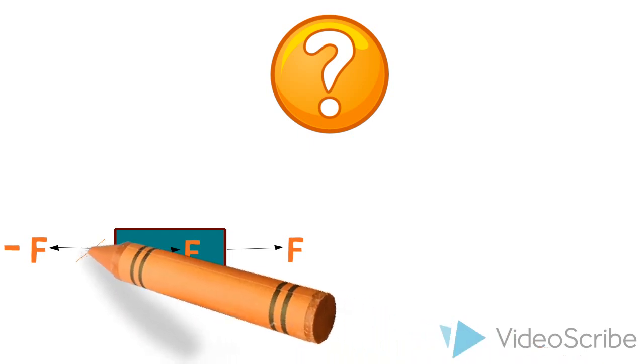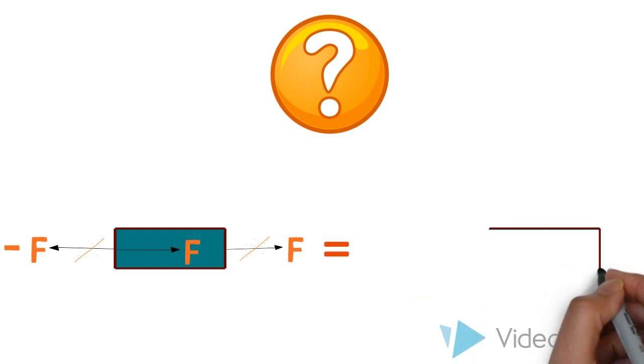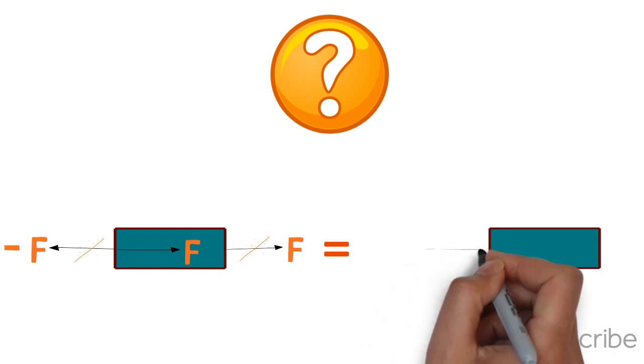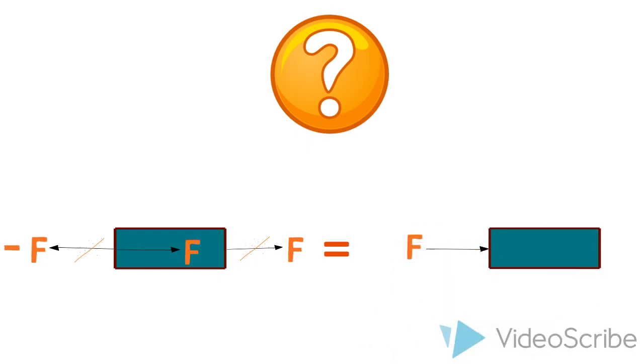The negative force on the left side and the positive force on the right side will cancel each other, leaving only the force on the left. Force F has now been moved from the right side to the left without modifying its external effects on the block.